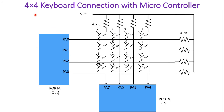Let us start with the 4x4 keyboard connection with the microcontroller. I have taken four pins of port A — PA0, PA1, PA2, and PA3 — as output pins, and PA4, PA5, PA6, and PA7 as input pins. So PA0 to PA3 will form four rows for the keyboard interfacing, and PA4 to PA7 will form four columns for the keyboard interfacing.